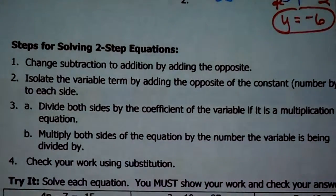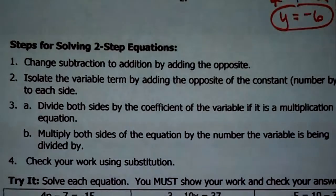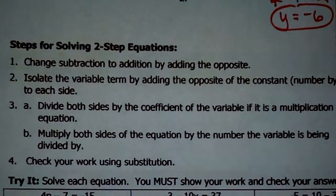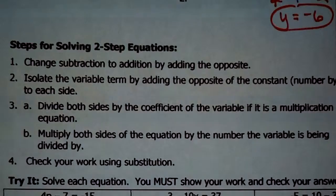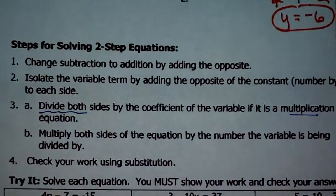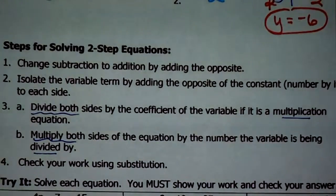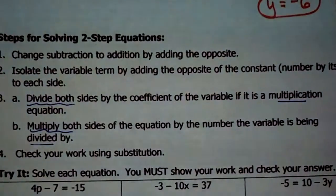So in two-step equations, it takes 2 steps to solve it — you're working backwards, basically. Here are the steps. Step 1 is always the same: change subtraction to addition by adding the opposite, making everything addition so we can use our commutative and associative properties. Then Step 2: isolate the variable term by adding the opposite of the constant term — get the variable term by itself. Then you'll either be left with a multiplication or division equation. If it's multiplication, divide both sides by the coefficient of the variable. If it's division, multiply each side by whatever the variable is being divided by. And you can check every single solution just like before.